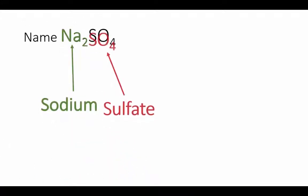Our next example has a group 1 metal, this is sodium. Our anion here is a polyatomic ion, that's sulfate, from our list to memorize. So the name of this compound is simply sodium sulfate.